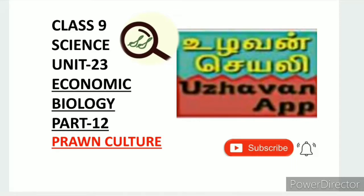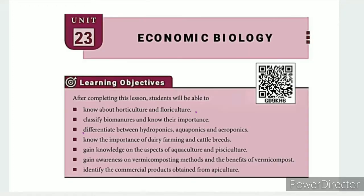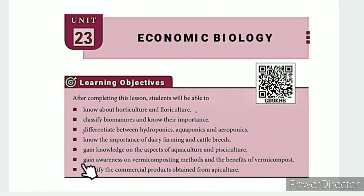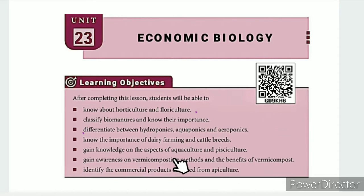Greetings from SS Class 9 Science Unit 23 Economic Biology Part 12, RON Culture. The learning objectives are: know about horticulture and floriculture; classify bio-manuals and know their importance; differentiate between hydroponics, aquaponics and aeroponics; know the importance of dairy farming and cattle breeds; gain knowledge on aquaculture and pisciculture; gain awareness on vermicomposting methods and benefits of vermicompost; identify commercial products obtained from apiculture.